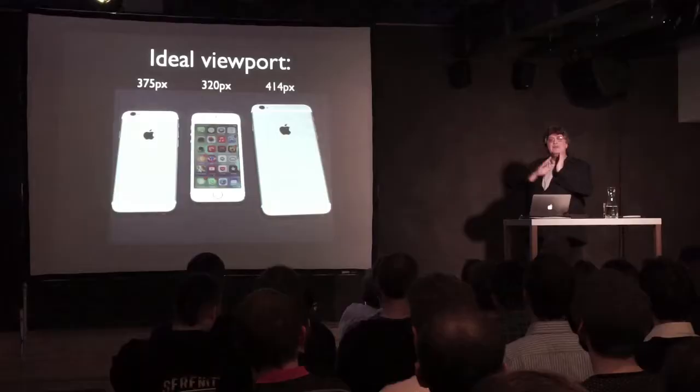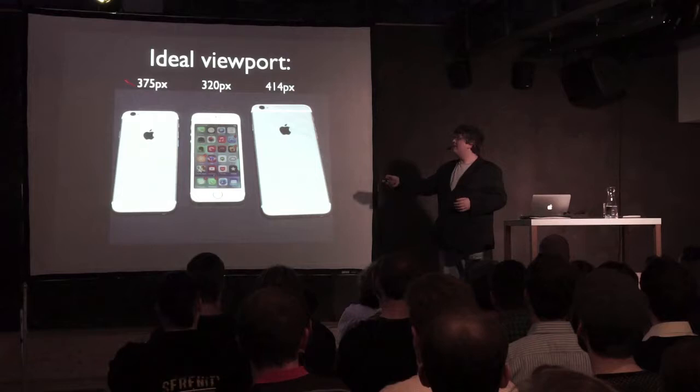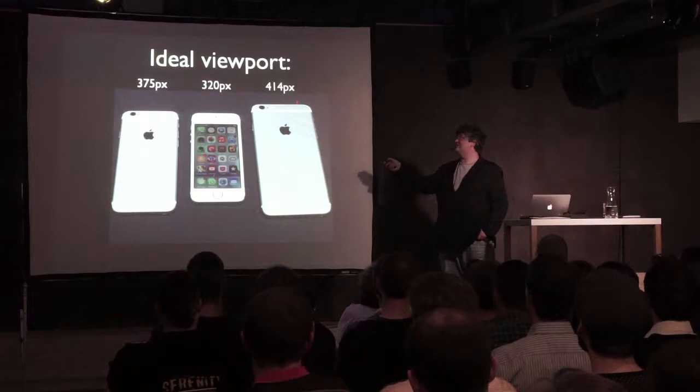Apple has such a huge mind-share among web developers that everybody — especially in the early days of mobile web development — thought: mobile web development means 320 pixels. If it works on the iPhone, everything's right. No, it's not. There's more than just the iPhone. People refused to see it, but now they're forced to, because the newest iPhones work with 375 and 414 pixels instead of 320.